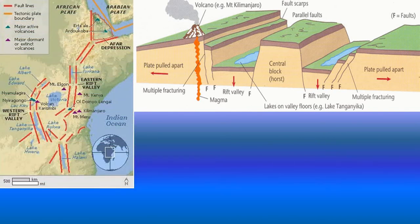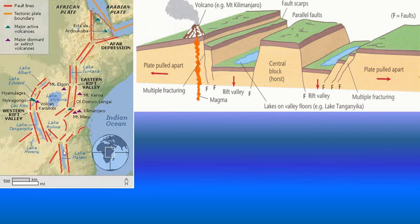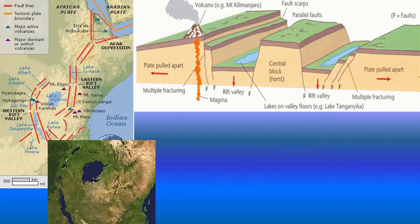This map shows some examples of the rift valley lakes we have just discussed. It shows the stretch of the Great Rift Valley from the Horn of Africa and Ethiopia down to Tanzania and Malawi. Here we have Lake Albert, Lake Edward, Lake George, Lake Kivu, Lake Tanganyika, Lake Rukwa, Lake Malawi, and Lake Turkana.